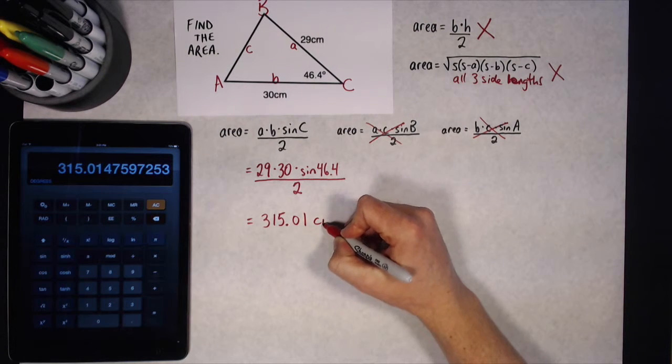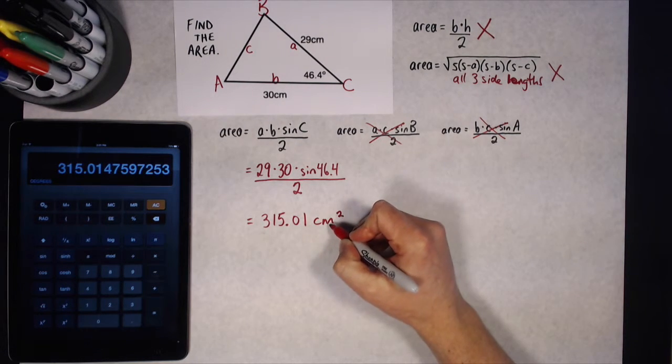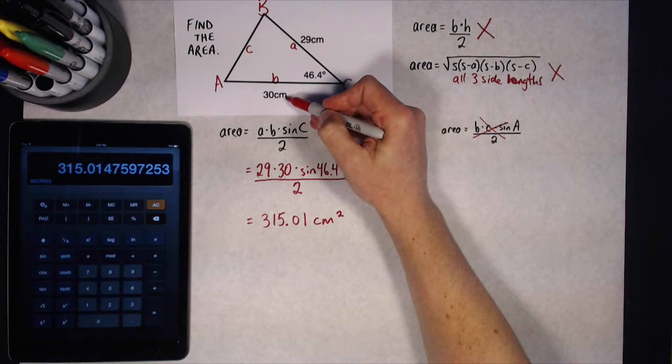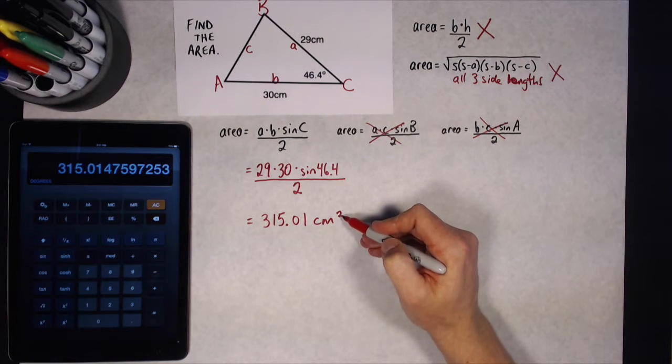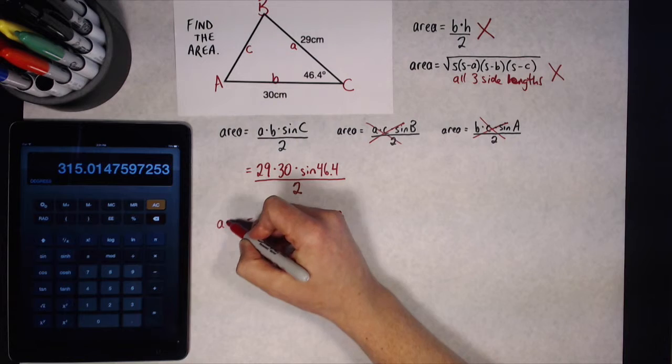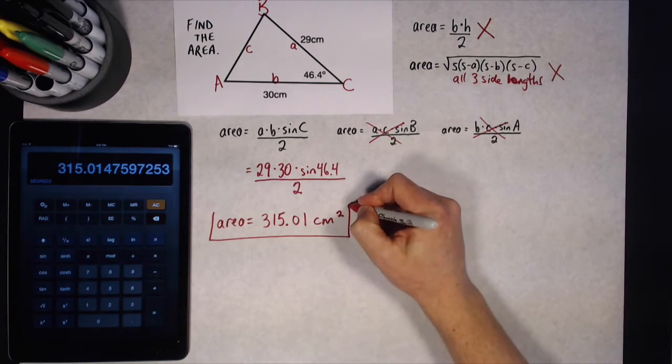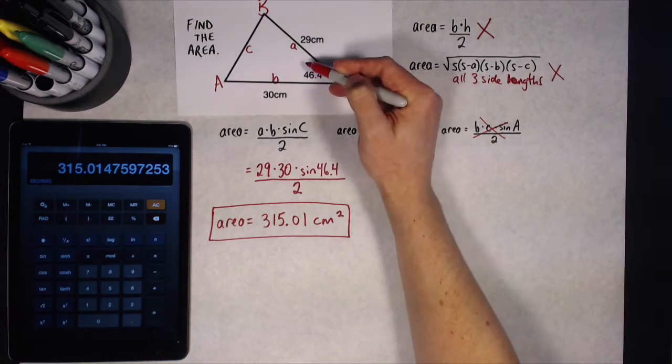315.01 centimeters squared. Remember, area is measured in centimeters in this case, and it's always squared when we're talking about area. And that is the final answer for the area of this triangle.